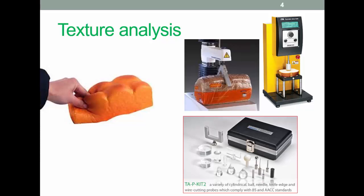A range of texture analyzers are available with many probes for different foods. Click on the image of a probe kit for a video. This machine here, Brookfield BT3, is the one we have in the food lab.